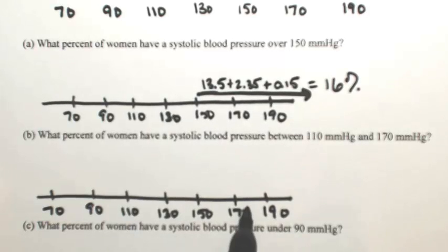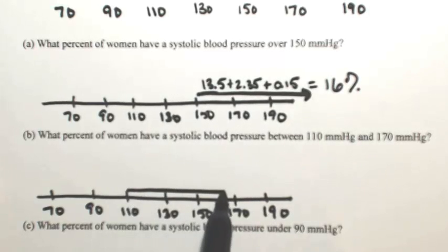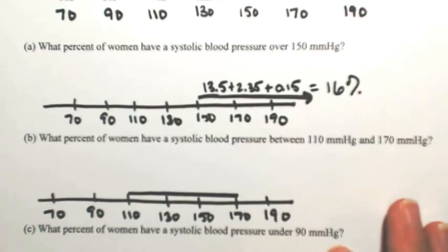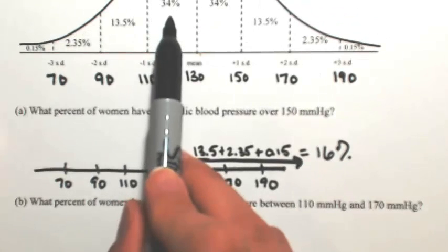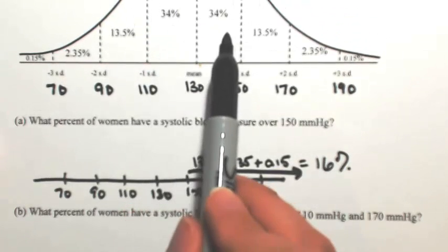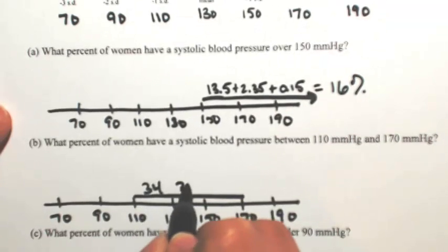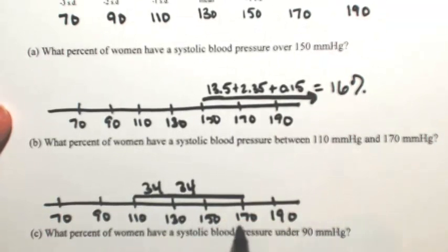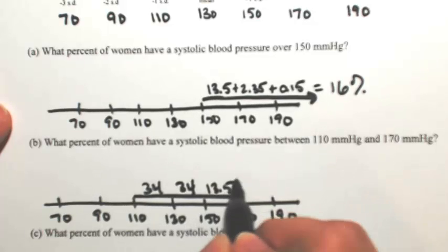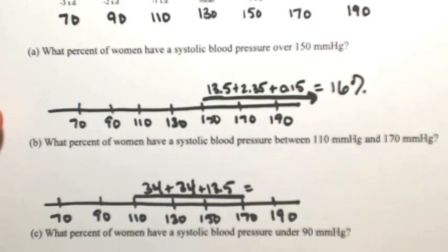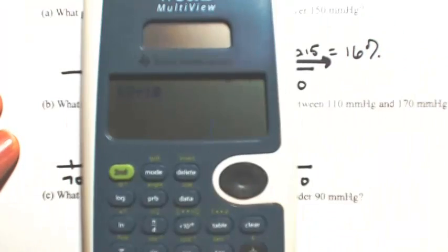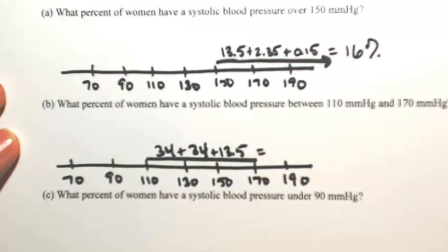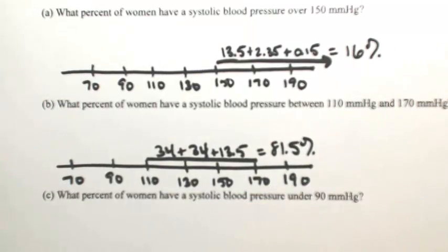So we're looking between 110 and 170. So matching up where this is, 110 is one standard deviation to the left. So between 110 and 130, we have 34%. After 130, we also have 34%. Then between 150 and 170 is 13.5%. So adding all of this together, 68 plus 13.5 gives us 81.5% of women have a systolic blood pressure between 110 and 170.